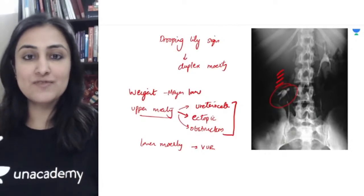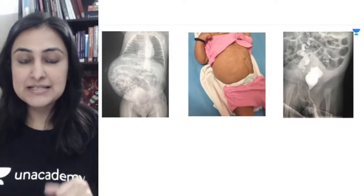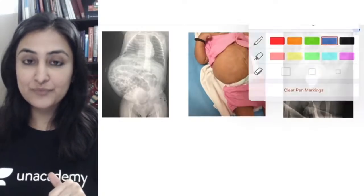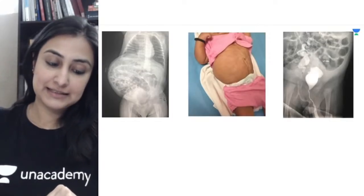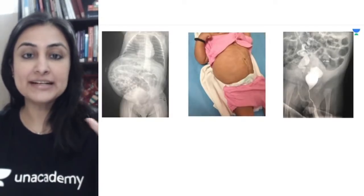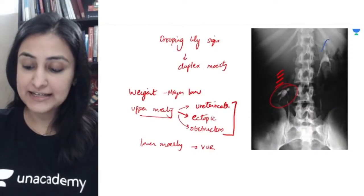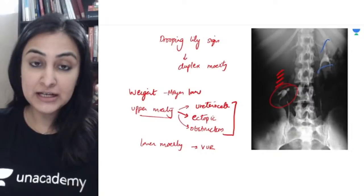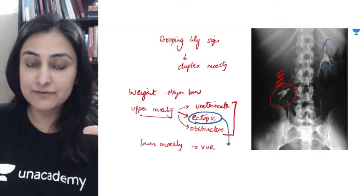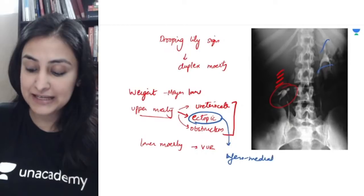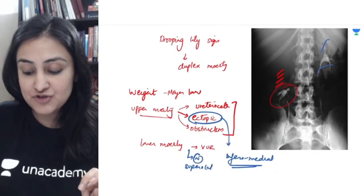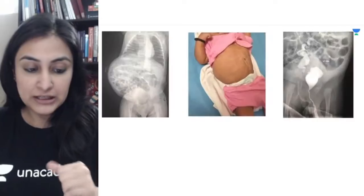This is the whole explanation of the drooping lily — very very important. Moving to the next image cluster: these are both duplicated collecting systems of the kidney. The ectopic insertion of the upper moiety — vowels sticking together — will be inferomedial to the trigone, whereas the lower moiety inserts normally, superolateral to the upper moiety.